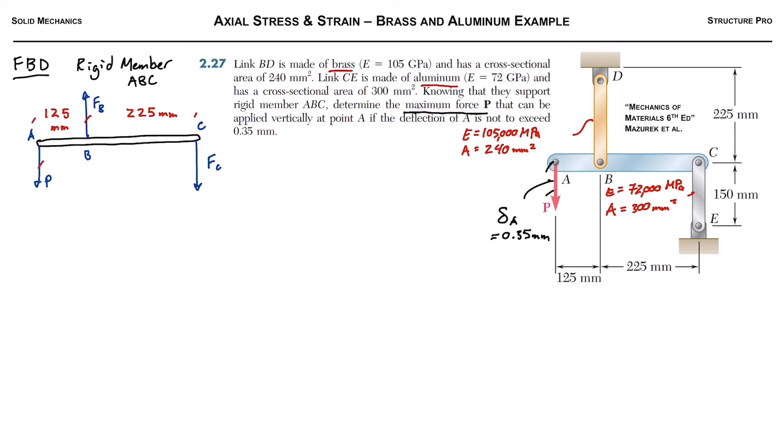Next, we're going to sum moments about C, because this rigid link isn't moving. And so that gives us 350P equal to 225FB. So we can isolate FB and solve for it in terms of P, and we got 1.556P. We can do the same thing, summing all the moments about B, and then we end up with FC equals 0.556P. So both in terms of P.